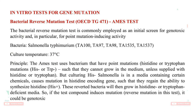The first test for genotoxicity and mutagenicity is the bacterial reverse mutation test, guideline 471 — the famous Ames test. The strain used is Salmonella typhimurium. The bacterium has point mutations lacking histidine and tryptophan, such that they cannot grow in the medium unless supplied with histidine or tryptophan. But if the tested chemical induces a reverse mutation restoring histidine synthesis, it can grow in the absence of histidine, confirming mutagenic activity on the DNA.